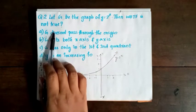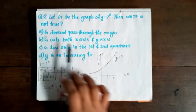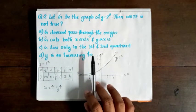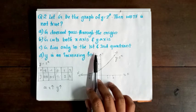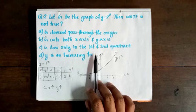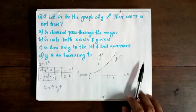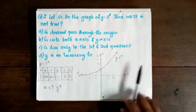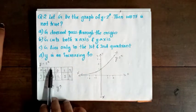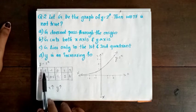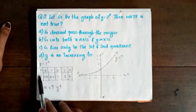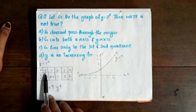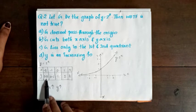Question 2: Which of the following is not true? We have a graph of y equals 2 to the power x. First, we plot the graph. For x equals negative 2, y equals 0.25.